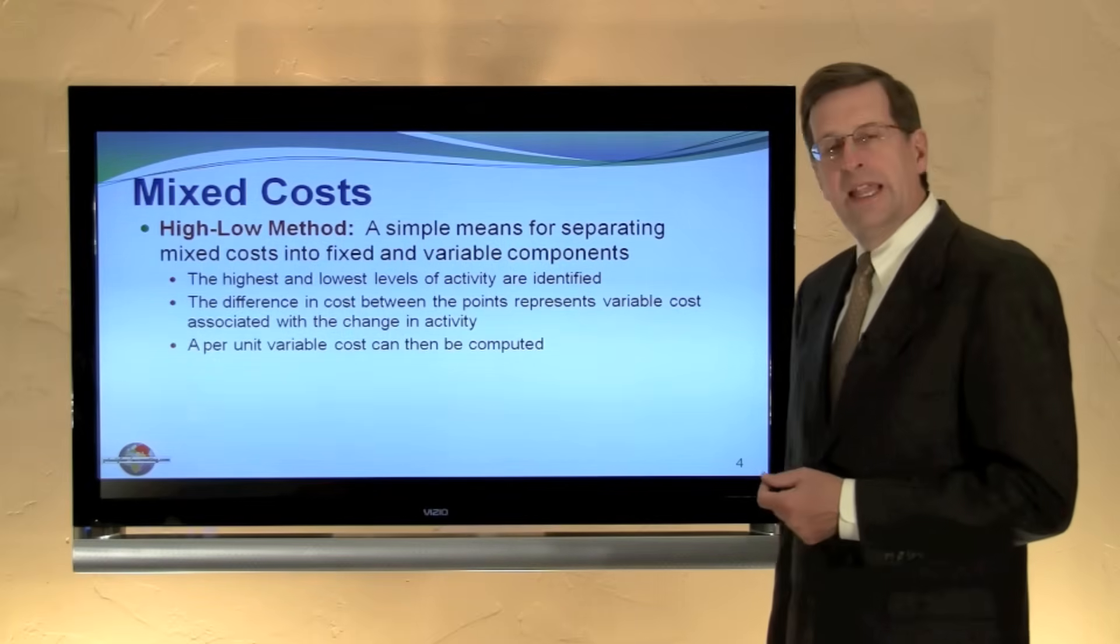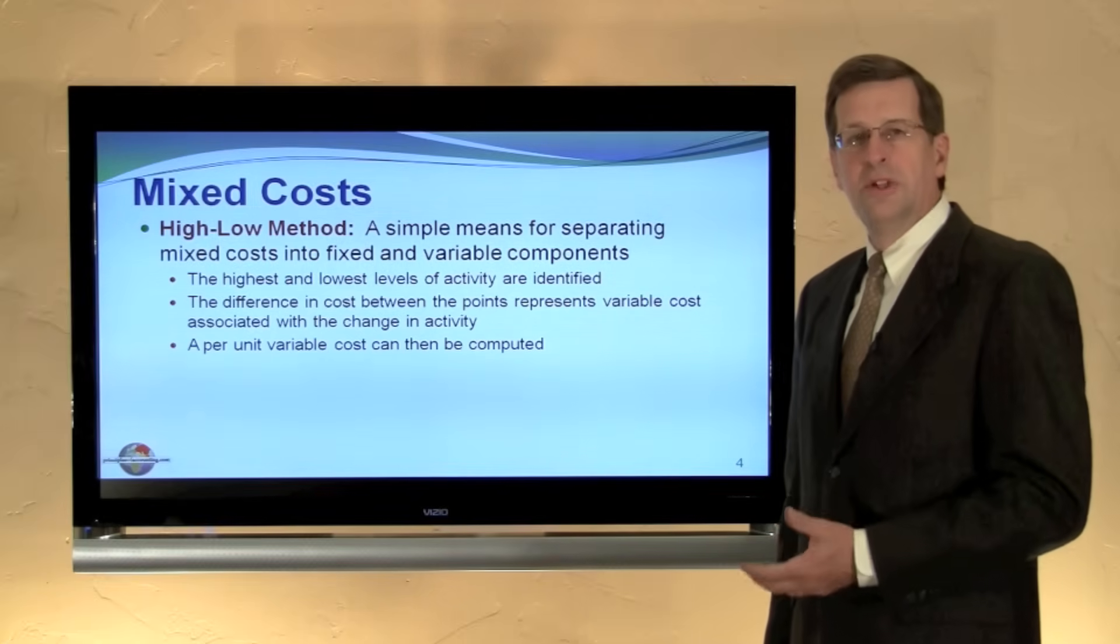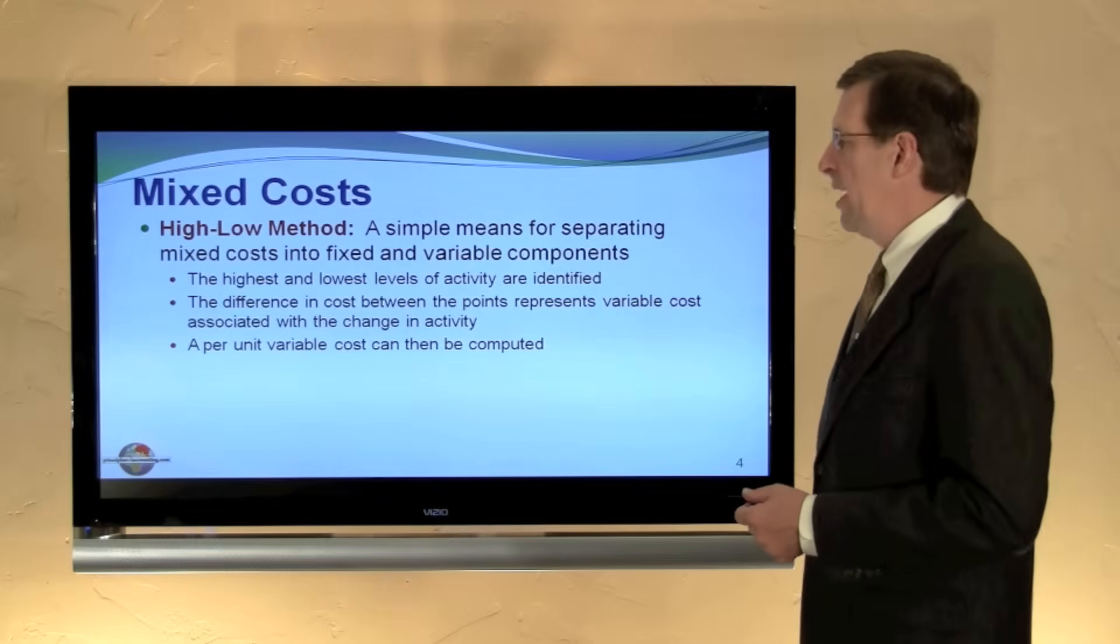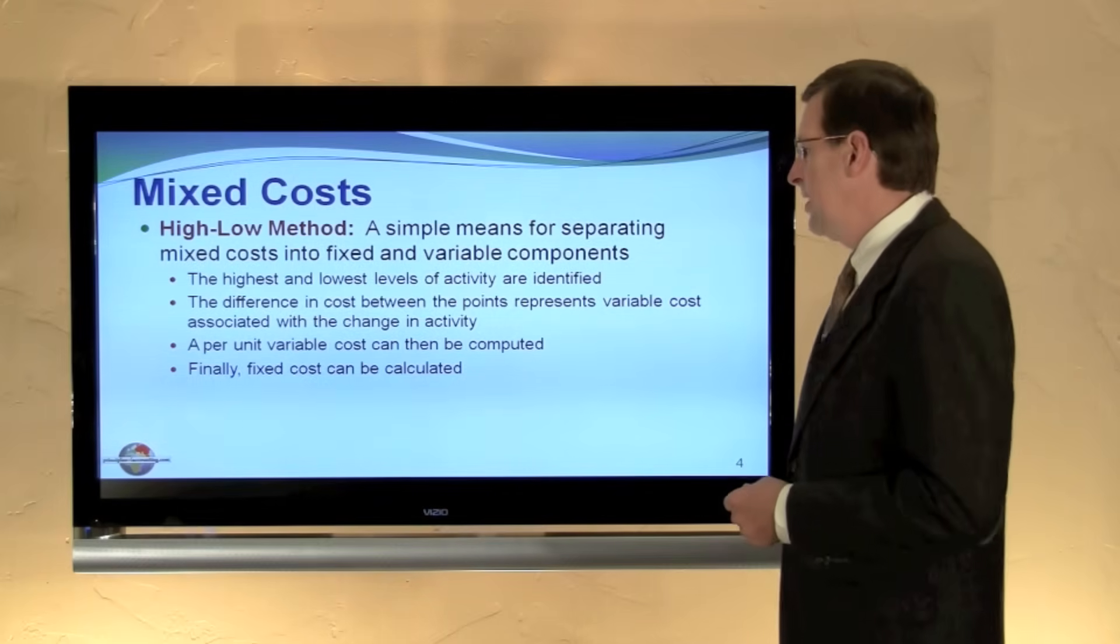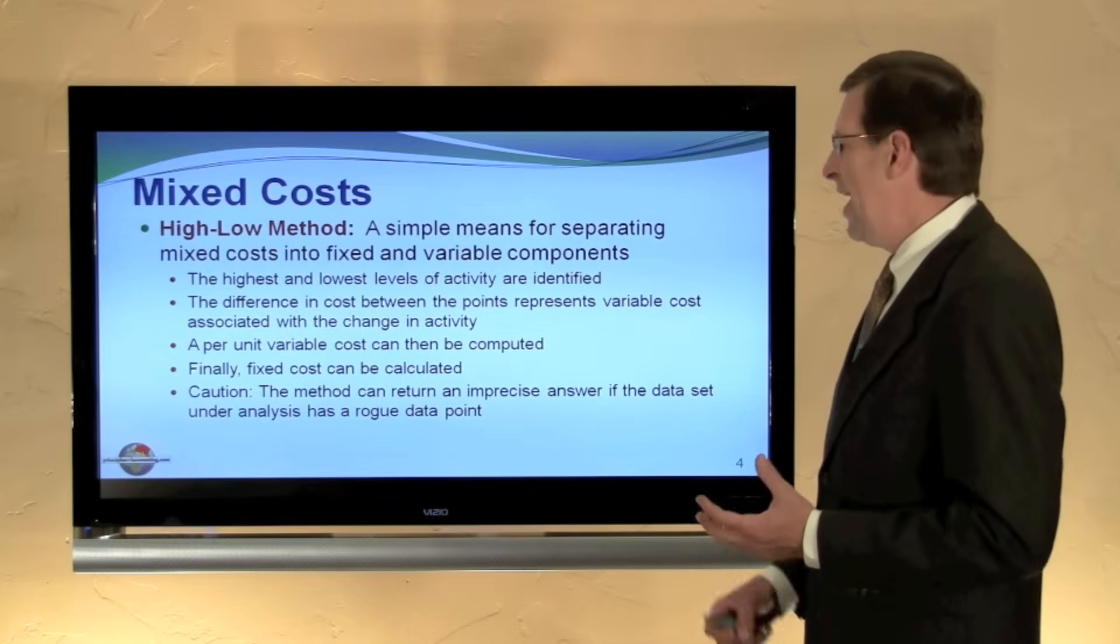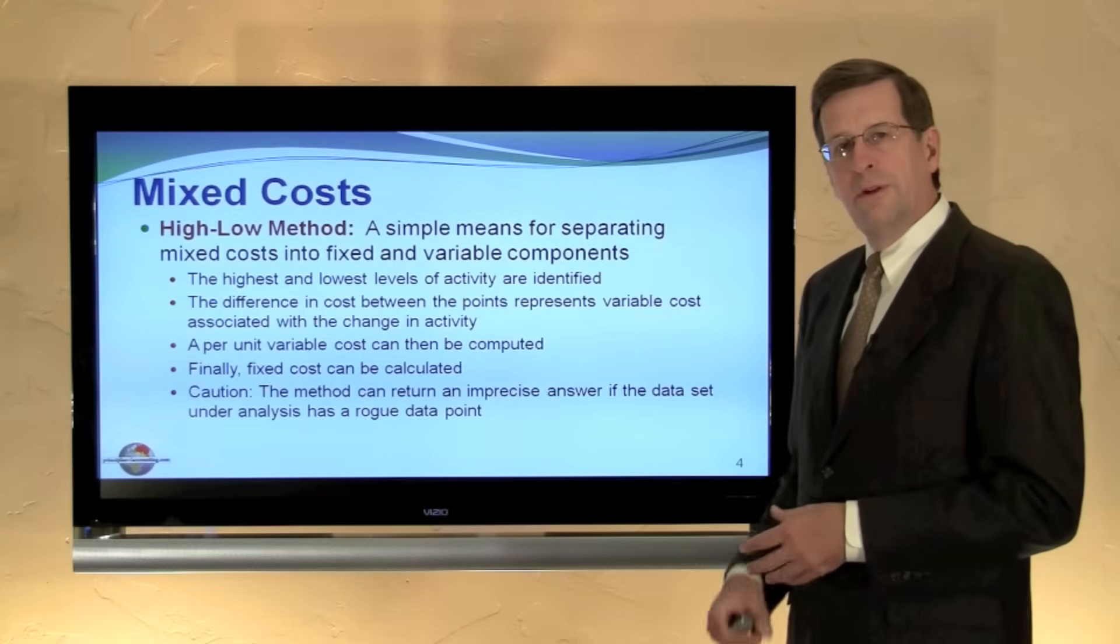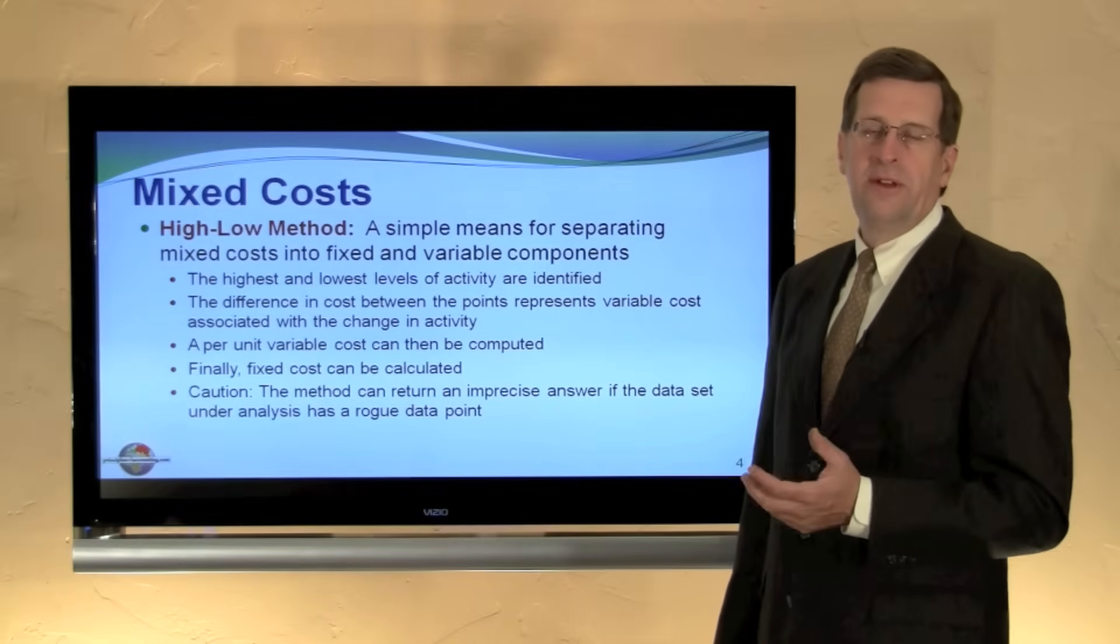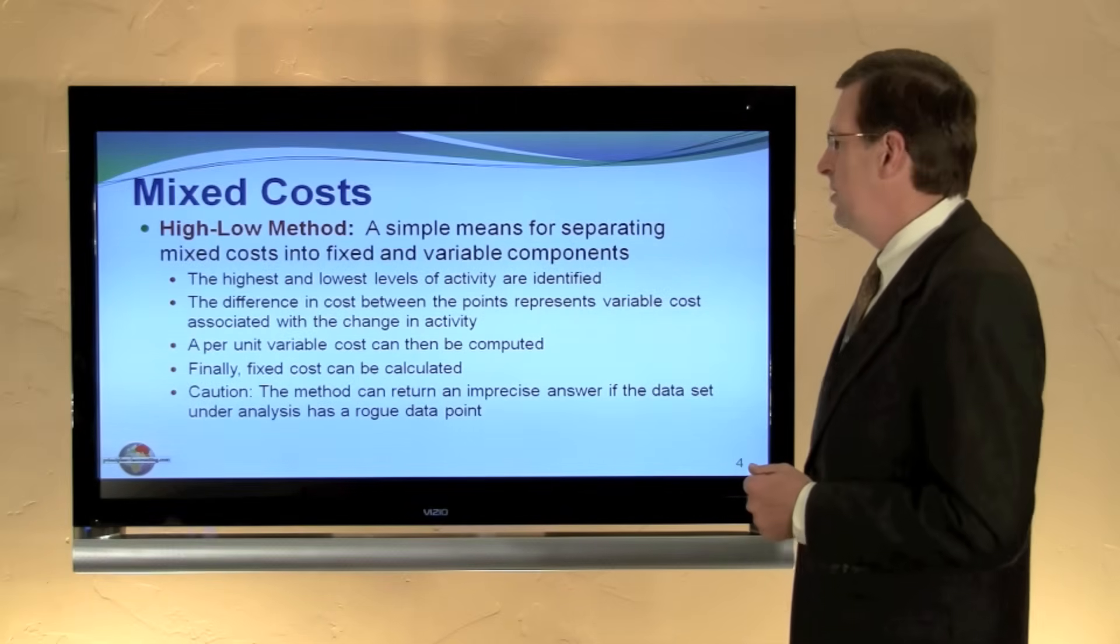And based on that, we would calculate a variable cost per unit. In other words, we have so much change in volume and so much change in cost, that suggests the variability rate. The remaining amount in each case would be the fixed cost. Recognize that this method can be very imprecise if we have outliers or rogue data points. In other words, if a high point is way out of the norm or a low point is way out of the norm, then our calculations could be suspect.